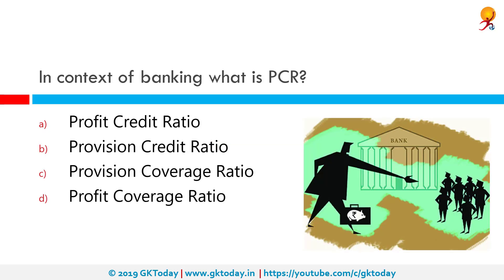In the context of banking, what is PCR? The correct answer is Provision Coverage Ratio. The Provision Coverage Ratio gives an indication of the provision made against bad loans from the profit generated. Higher the PCR, lower is the unexposed part of the bad debts.